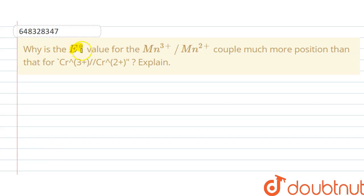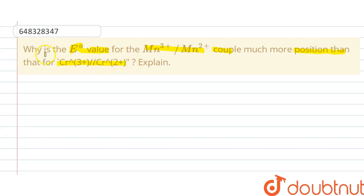Hello students. The question is: why is the E0 value for the Mn³⁺/Mn²⁺ couple much more positive than that for Cr³⁺/Cr²⁺? So the question is why is the E0 value of Mn³⁺/Mn²⁺ more positive than that of Cr³⁺/Cr²⁺.